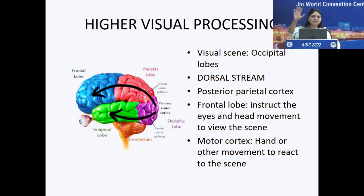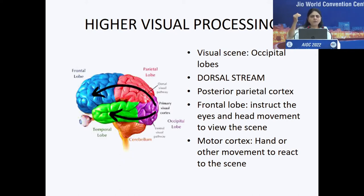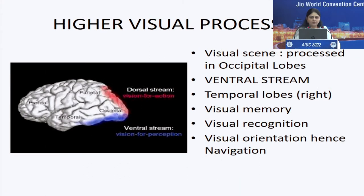Higher visual processes include two main streams. The dorsal stream takes visual information from the occipital lobe to the posterior parietal cortex, then to the frontal lobe and motor cortex — giving instructions to the eyes and head to view and respond to a scene. The ventral stream goes from the occipital lobe through the temporal lobes, helping identify what an object is and its relation to space.